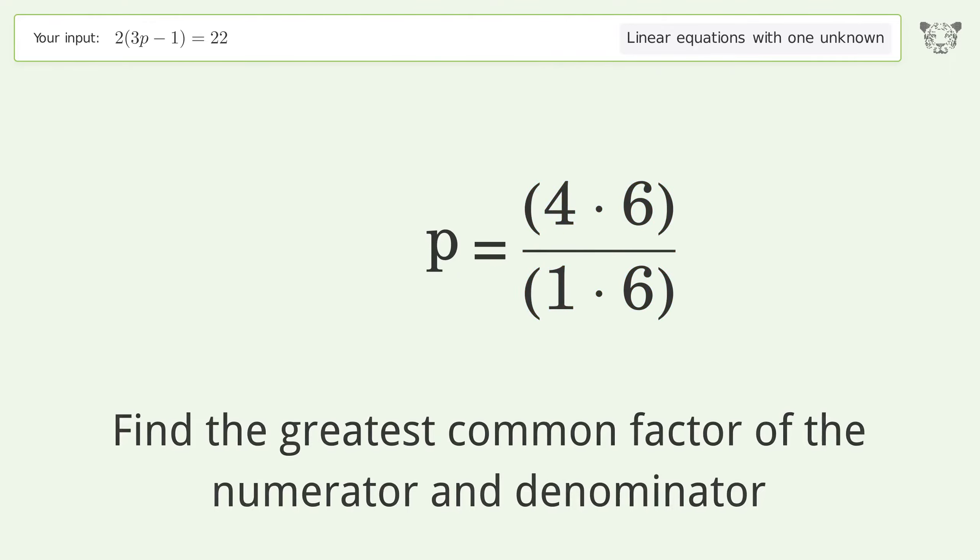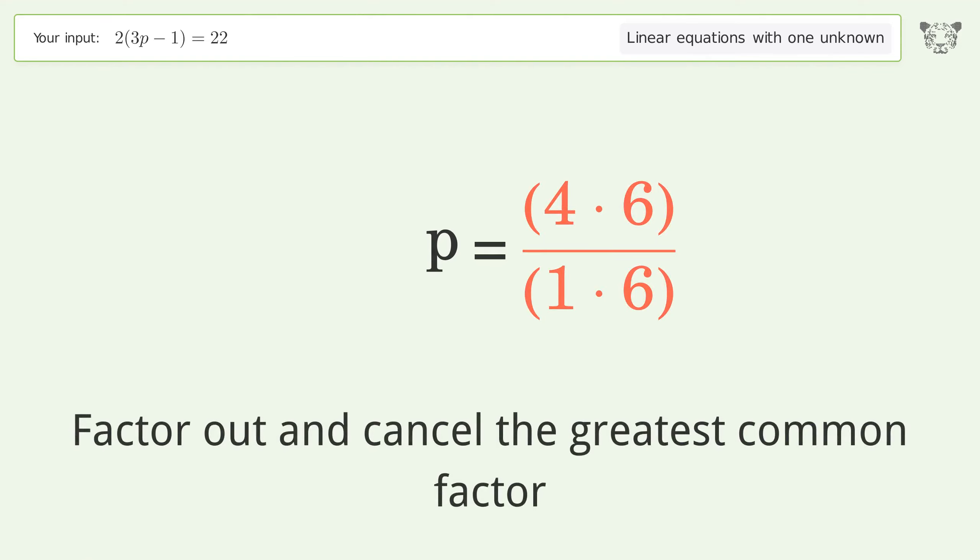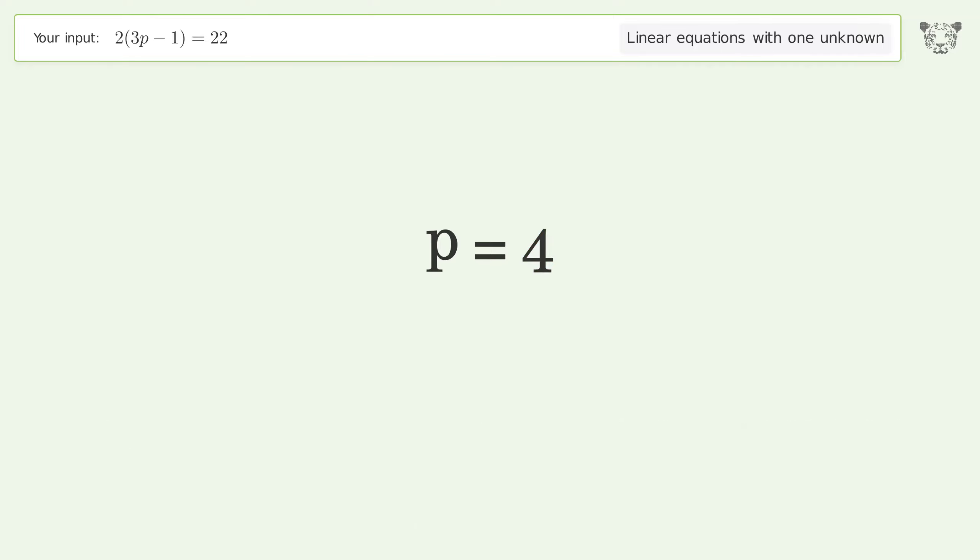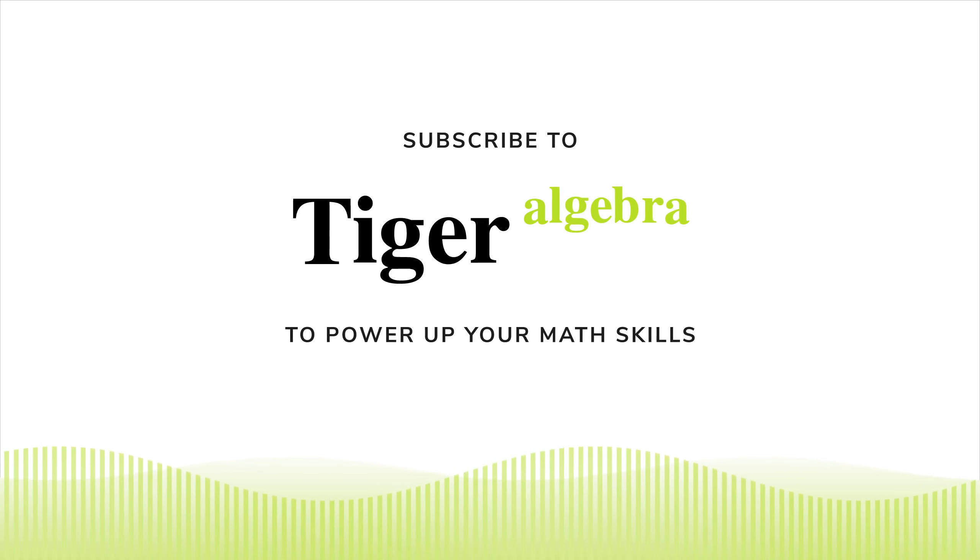Find the greatest common factor of the numerator and denominator. Factor out and cancel the greatest common factor. And so the final result is p equals 4.